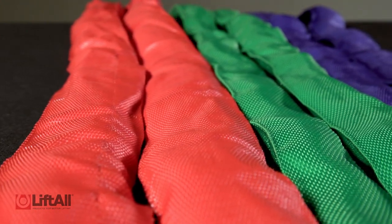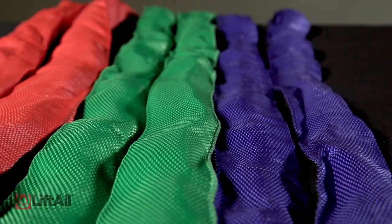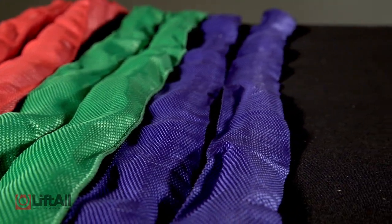The Tough Flex round slings are color-coded for quick and easy identification of sling capacity and have an exceptional low stretch of about 3% at rated capacity.